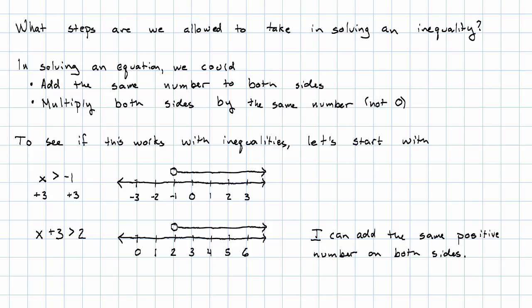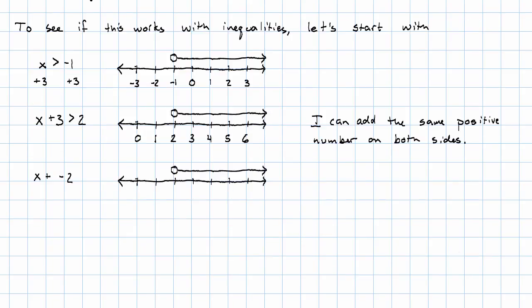What about a negative number? Can I do that? Let's say I want to add negative 2 to my original x. Well, I'm going to add negative 2 to each of these labels. Negative 3 plus negative 2 is negative 5. Negative 4, negative 3, and so on.